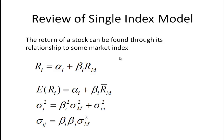Before we do that, let's take a quick look and review the single index model. The single index model says the returns for security i are determined by some market index. If you take the expected return, you get the expected return equal to some intercept term — some constant term — plus the sensitivity of our security to the average return of some market index. The variance for the security is going to be equal to beta i squared times the variance of the market, plus some variance of the error term. And then the relationship between each pair of assets i and j can be found by taking each security's beta, multiplying them together, and then multiplying by the variance of the market index.